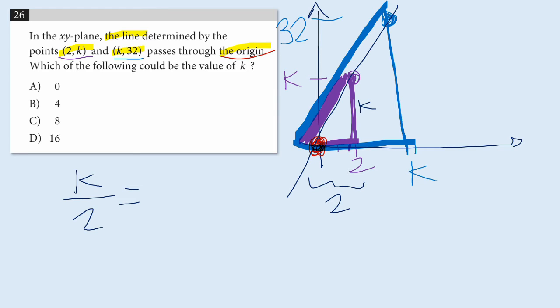Now let's look at the blue line segment. Well, its rise is 32, and its run is going to be k. So the slope of that blue line segment is 32 over k. And the slope of the purple line segment and slope of the blue line segment are equal, so we have this equation.